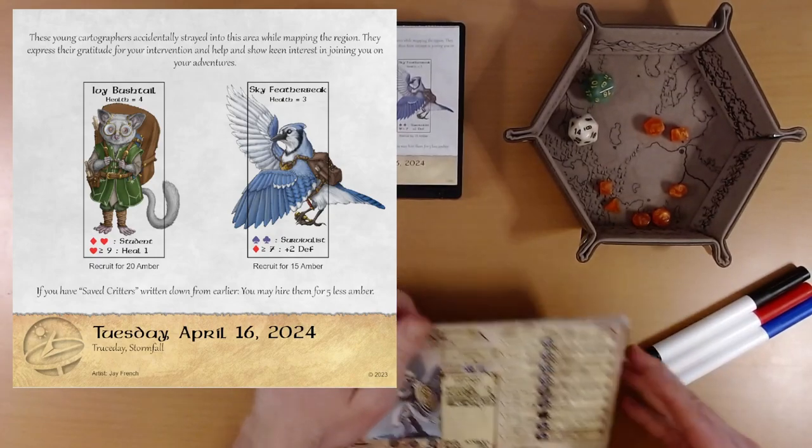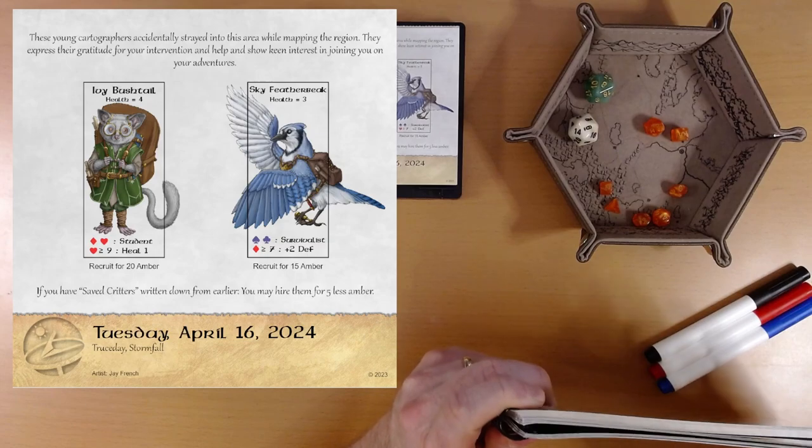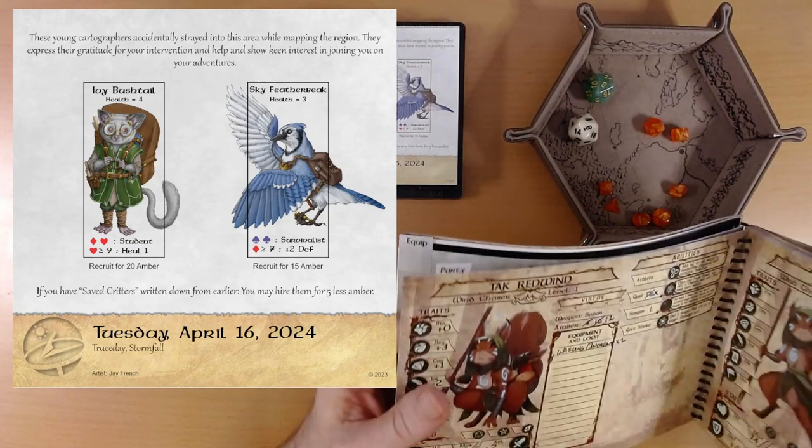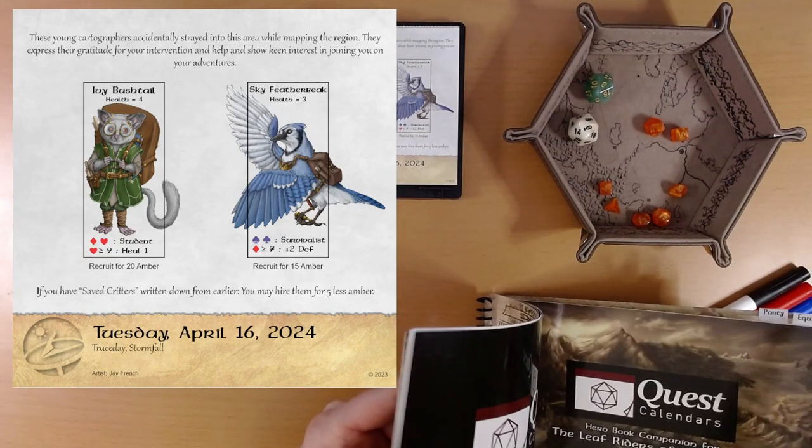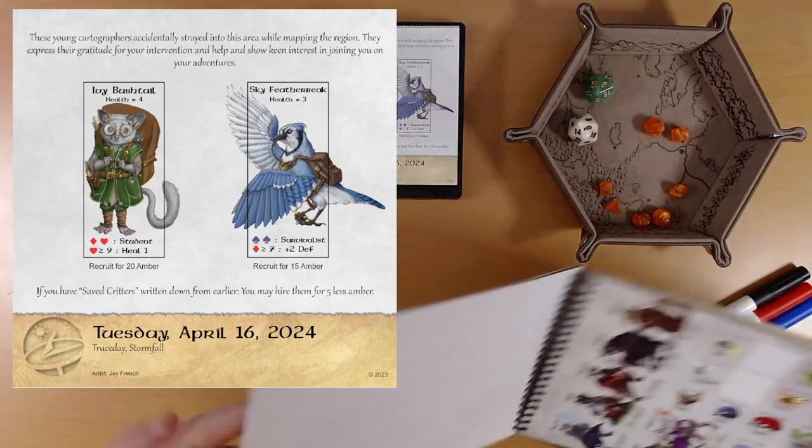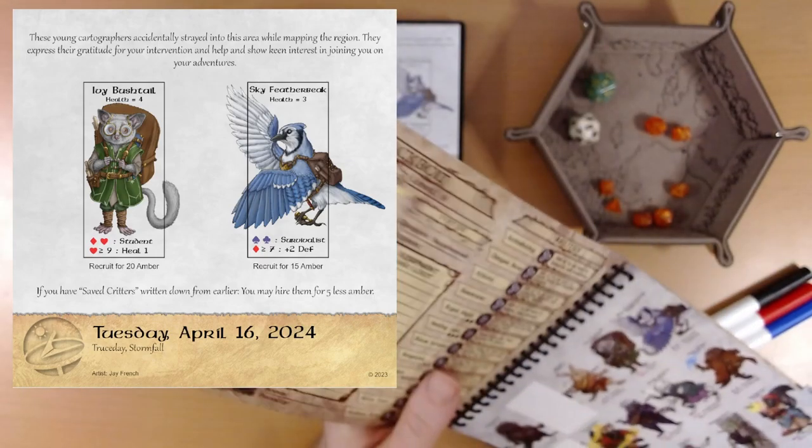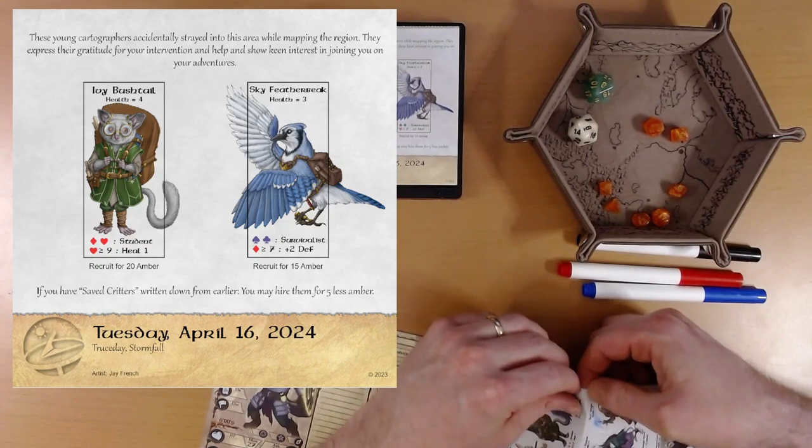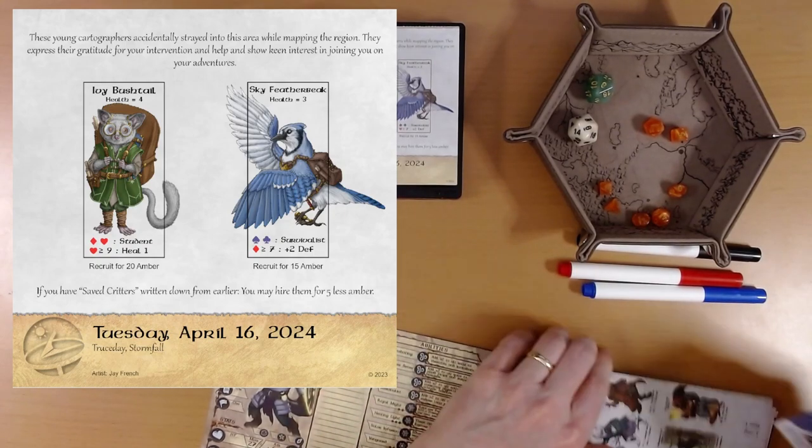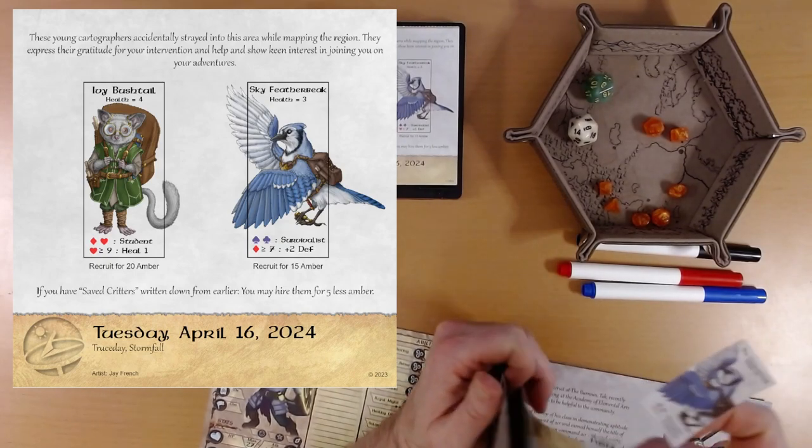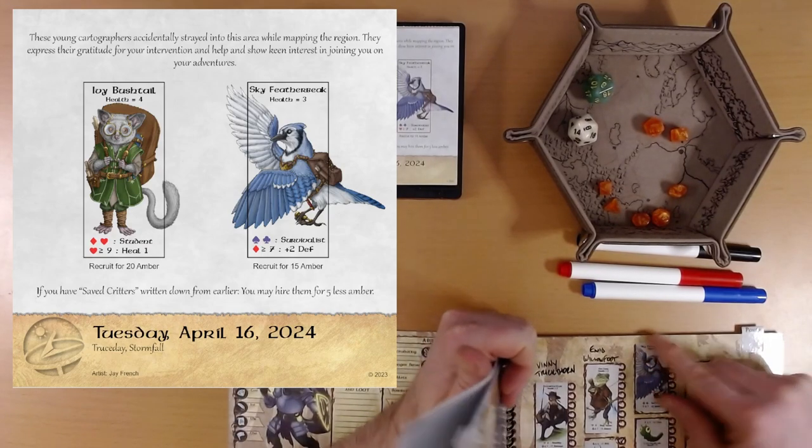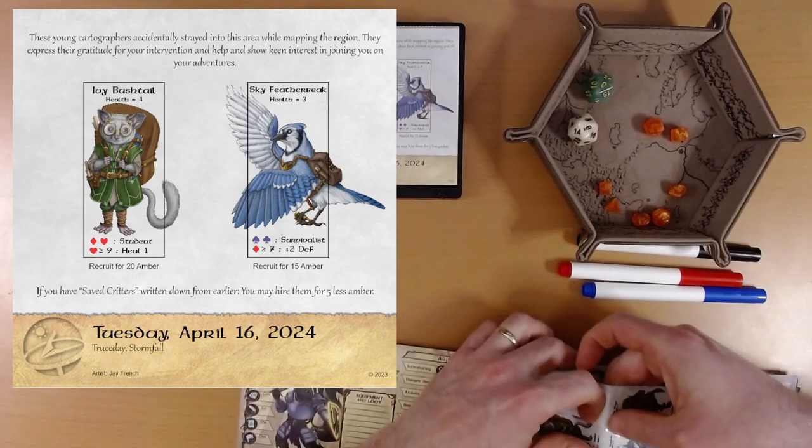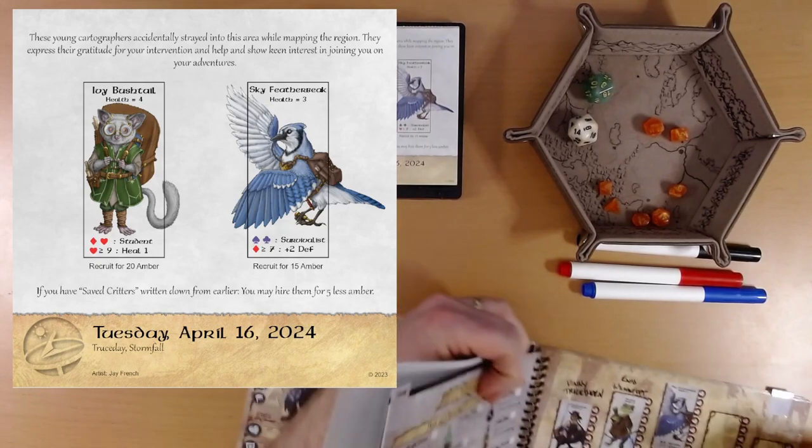Let's see what adventure is on the calendar for us today. These young cartographers accidentally strayed into this area while mapping the region. They express their gratitude for your intervention and help, and show keen interest in joining you on your adventures. We've got Ivy Bushtail and Sky Feather Beak.